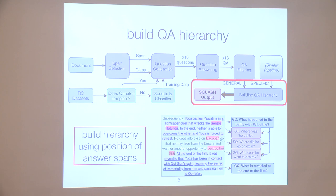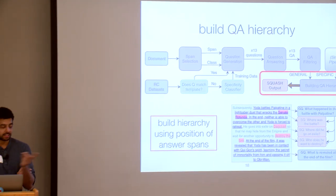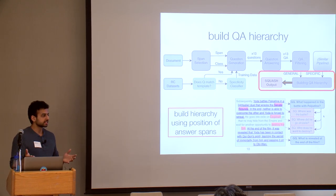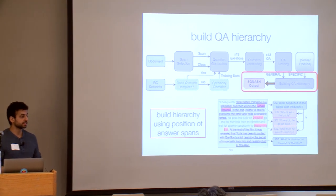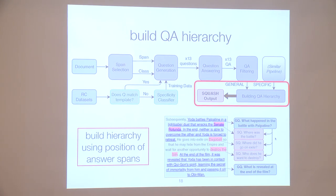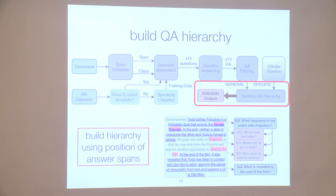One issue raised is that questions sometimes use pronouns — but this happens not because the model knows it's already referenced an entity, but because some underlying dialogue-based QA datasets contain pronouns in questions. There's nothing that forces the specific question's pronoun to refer to the same entity as the general question; it's just likely due to proximity. We could have done post-processing using coreference systems to filter these out, but didn't go that far.